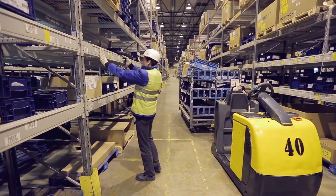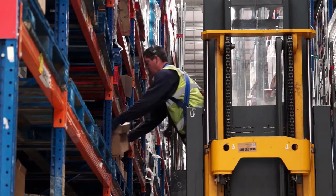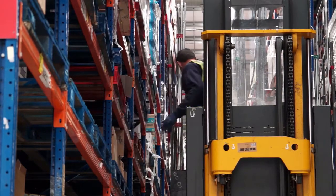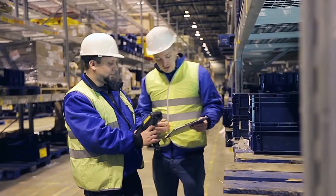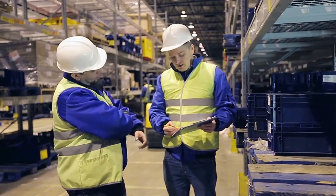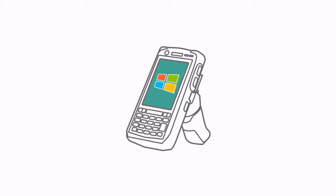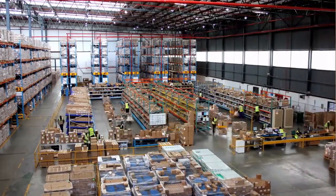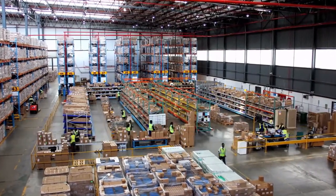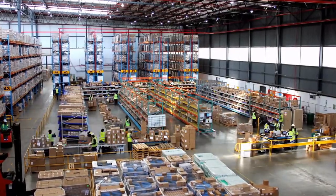Your web applications have worked great and employees have been comfortable using them for a device generation or two. But it's time to refresh your hardware, and devices running the Android operating system are on your short list. It's a big change from the Windows mobile devices you've been running to a touch-driven Android mobile computer. So what does this mean for your web apps and, in particular, the web-based systems your workers access daily to do their jobs?